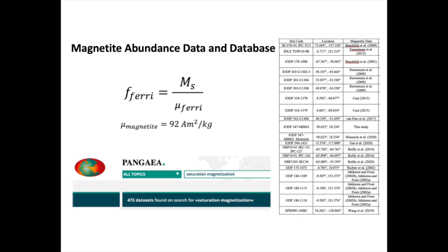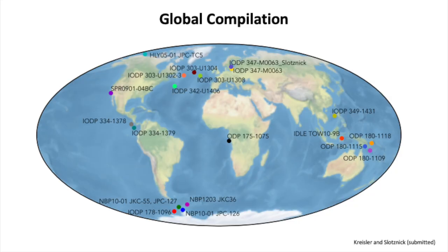Collecting all this data took a long time, so this is our first start at understanding how much magnetite is present and what factors control it. Here's a global map of our sites. Antarctica is heavily overrepresented, mostly because of Brendan's and Stephanie's work. Coastal environments are a little more represented. There could be some biases, but we hoped that having data at all latitudes spread across the globe would minimize those biases.